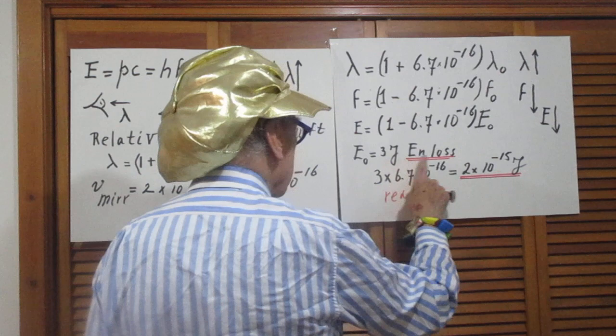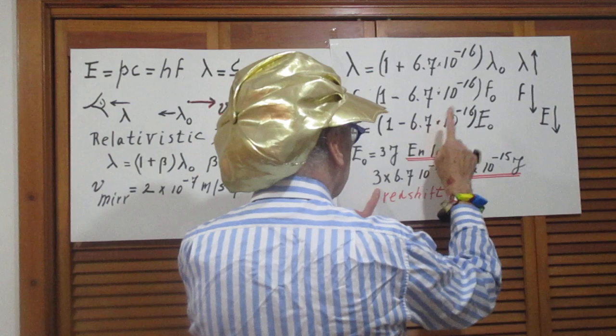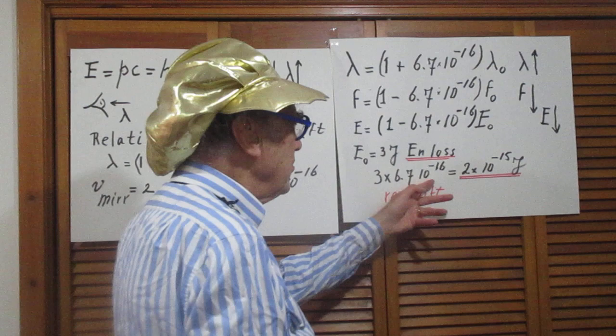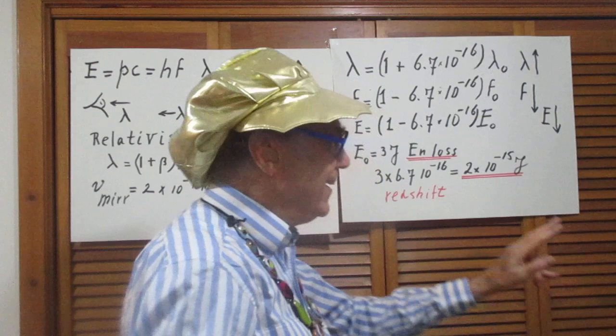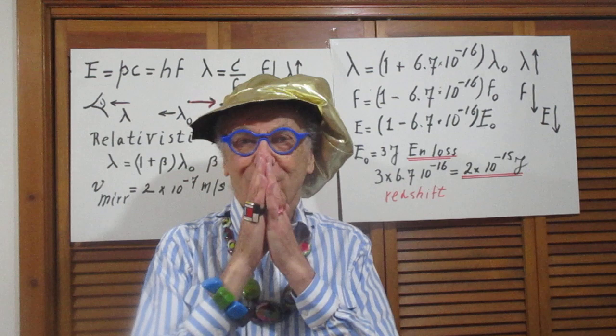So the 3 joules has an energy loss then of 3 times 6.7 times 10 to the minus 16, and 3 times 6.7 times 10 to the minus 16, lo and behold, is 2 times 10 to the minus 15 joules. So now you see the beauty of the physics.